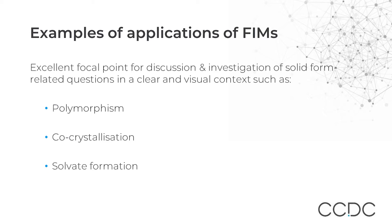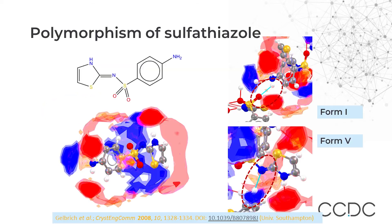FIMs can be used in multiple applications, and I'm going to be showing three applications. Starting with polymorphism, I'm showing an example of sulfathiazole, which is a compound that is well studied with regards to its polymorphic behavior. There are five different known polymorphs for sulfathiazole. We can use the full interaction maps to assess the match between the interaction preferences and observed interactions in each form, allowing us to identify signs of stability versus metastability.